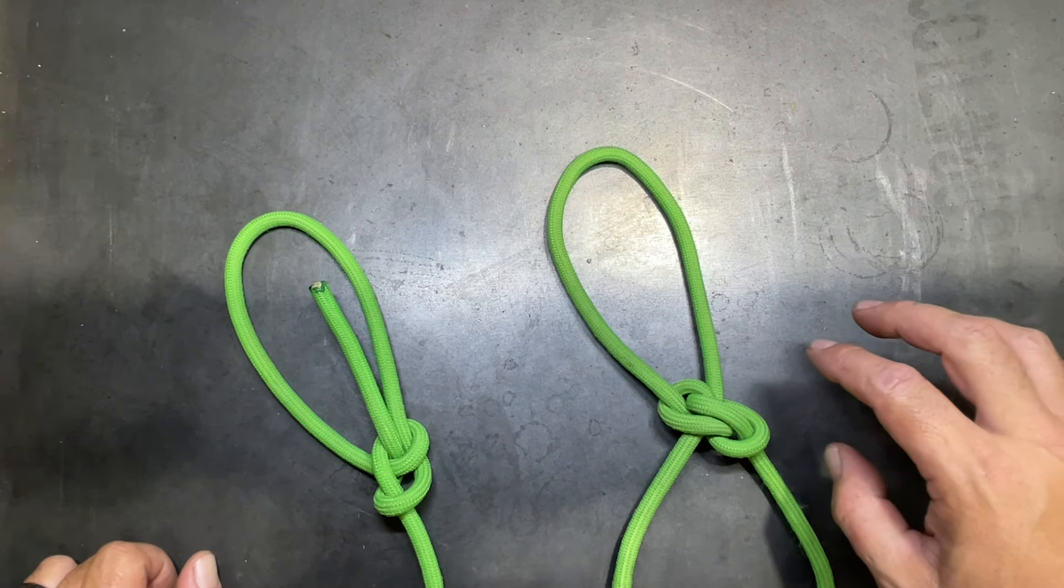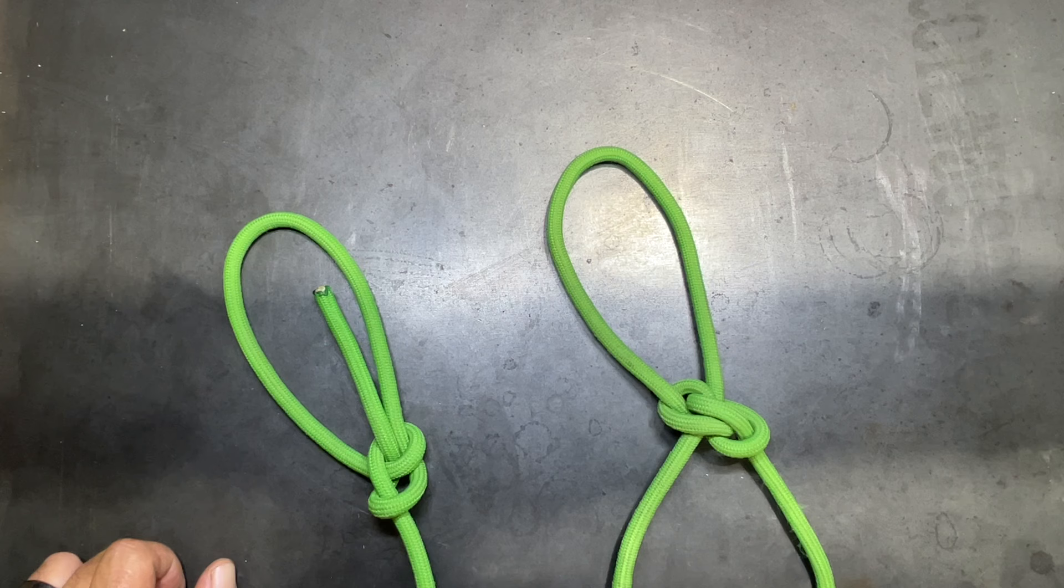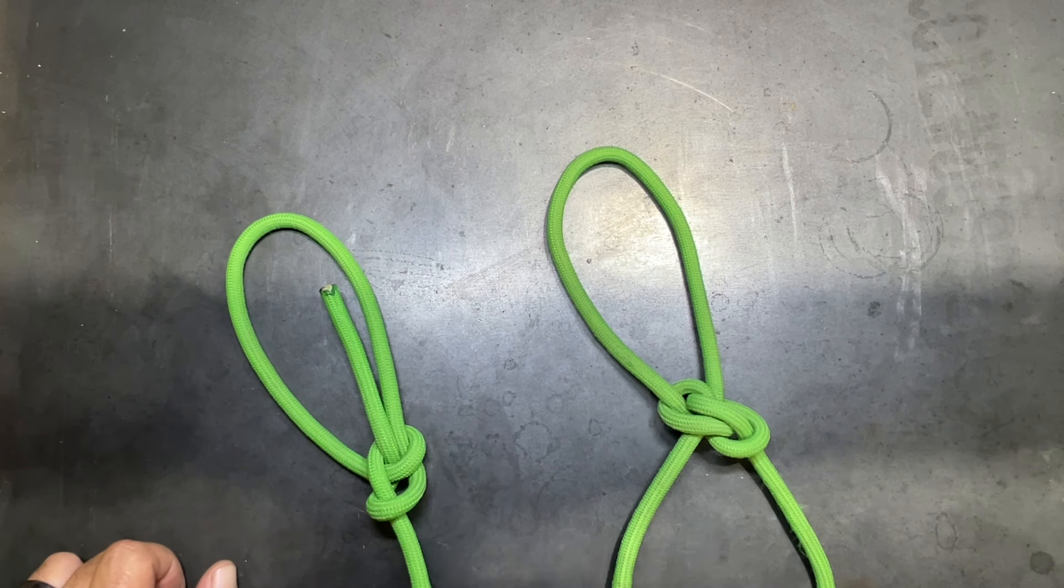However, the Zeppelin, as a single fixed loop knot, actually has some advantages over the bowline. The first of which, some people don't like that the tag end on the standard bowline lands inside of the loop.